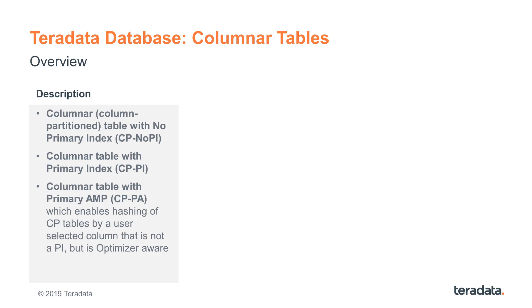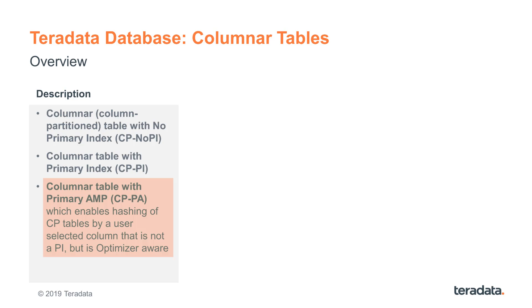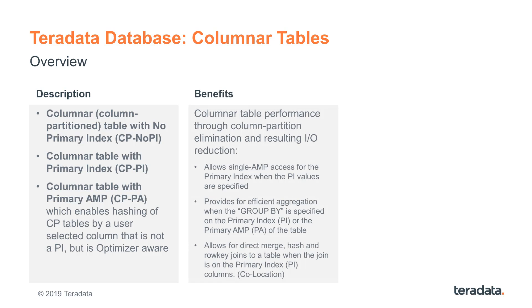The original implementation of the columnar tables back in Teradata 14.0 was predicated on a no-PI table, a table without a primary index. In 15.10 we have added the capability to have a column partition table with a primary index, and we also added a new concept called primary AMP that allows you to pick a column used for data distribution. The optimizer is aware of that but the row hash is not stored with the data. Column partition tables have been designed for space use and I/O reduction, which in turn can give you better performance through column partition elimination and compression. Depending on the choice of column partition tables you can get similar efficiencies as with row-based tables in regards to single AMP access, AMP local aggregations, and co-location for joins.